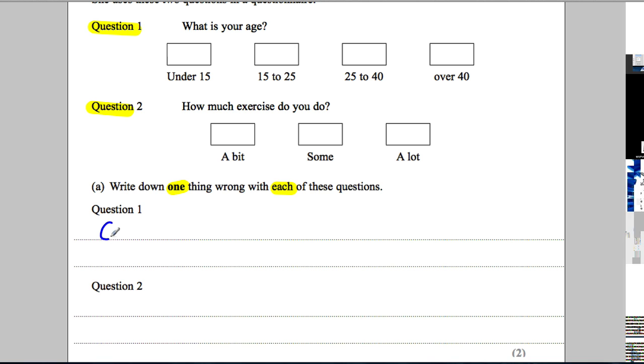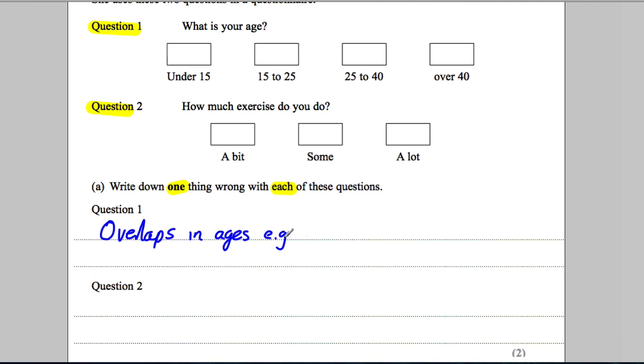Well, one thing is we've got overlaps. So, we've got overlaps in categories, in ages, e.g. age 25.